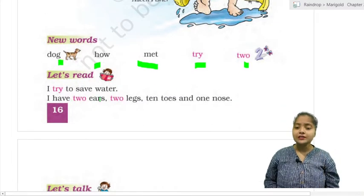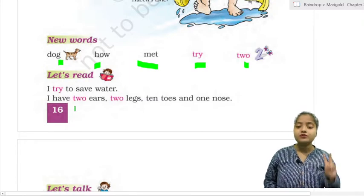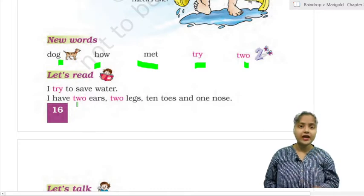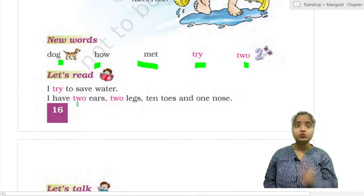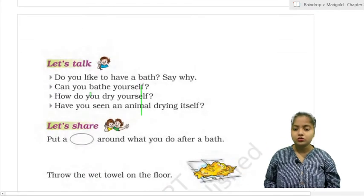So let's read. I try to save water. I have two ears, one, two. I have two legs, one, two. I have ten toes and one nose. I have one nose and ten toes.